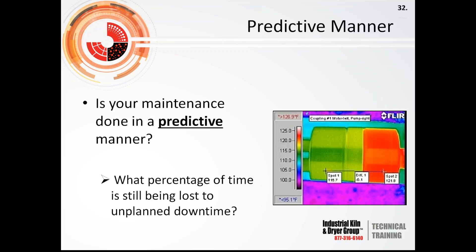Predictive maintenance obviously helps your reliability by looking at what is going on with your systems. For example, using thermal imaging to determine if you have higher friction in bearings or other equipment that needs planned downtime for replacement. If you can predict a failure before it occurs and plan downtime to fix it, reliability will improve because that failure will not occur during planned uptime.